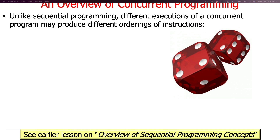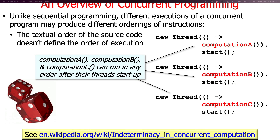Unlike sequential programs, different executions of a concurrent program may produce different orderings of instructions — this is by design and by necessity. In sequential programs, the ordering of source code instructions matched the logical order of execution. In contrast, concurrent programs don't behave that way intentionally; the textual order of source code doesn't necessarily define the execution order unless it accidentally runs that way.